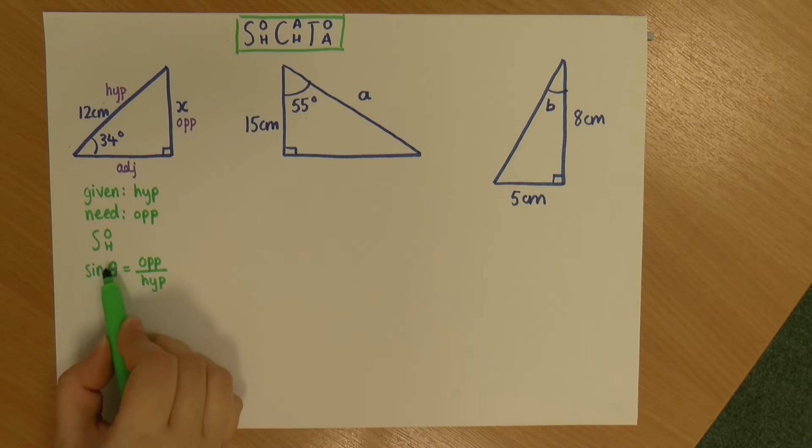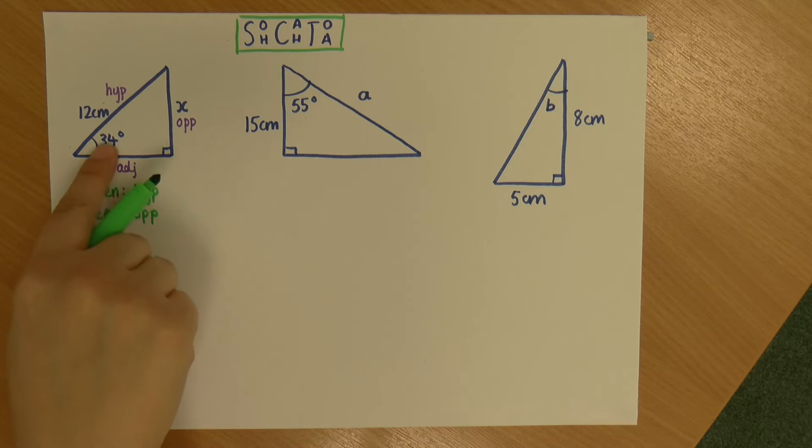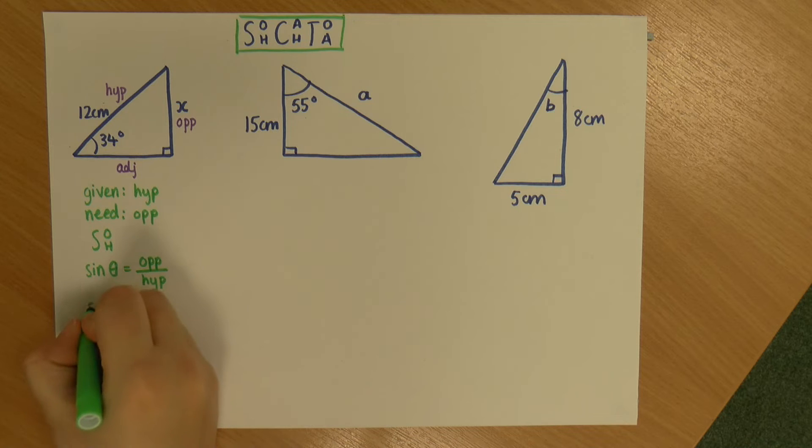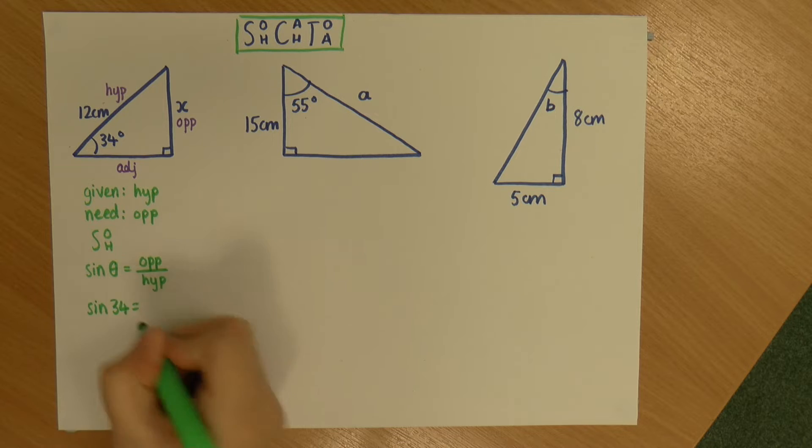And this symbol here is a theta. It may also say X instead of theta for angle. Okay, so we've got our sine angle is equal to the opposite divided by the hypotenuse. So I'm going to start filling in these values. So my angle is 34 degrees. I always use that angle, I don't use the right angle. So sine 34 is equal to the opposite, which we don't know, so I'm just going to put that in as X, over the length of the hypotenuse, which is 12.